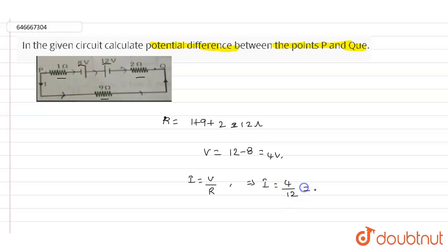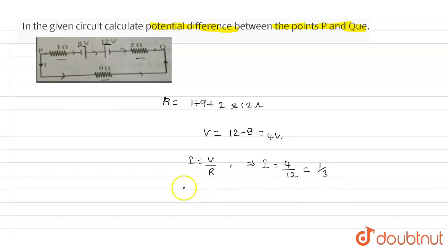And Vp value can be written as Vp plus 1/3 into 1 plus 8 minus 12 plus 1/3 into 2 will be equals to Vq.